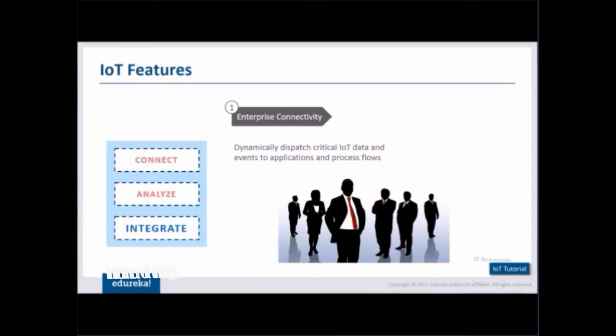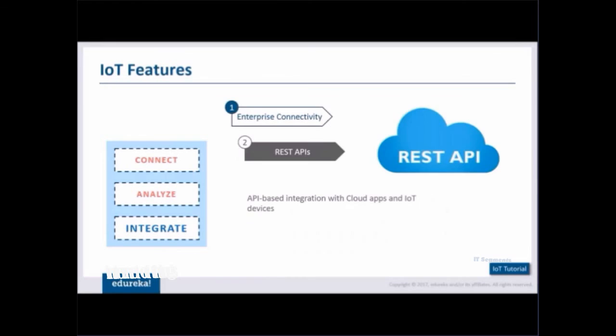How does this communication happen? For that we have REST API. Once I've integrated my REST API with the cloud application and my IoT, communication between the enterprise, the platform, and the things around us can be made more efficient and easy.